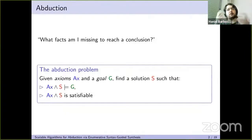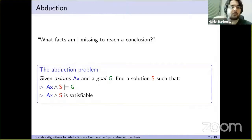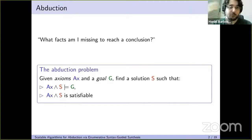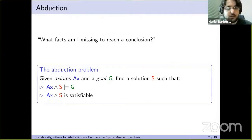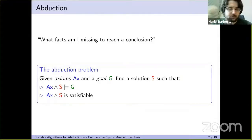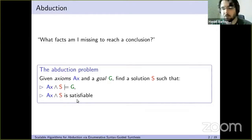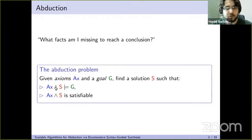Abduction — there are different definitions in different fields, but the one we're interested in is: what are the facts that are missing so that I can reach a conclusion, I can prove something. The definition we go by is that given a set of axioms and a goal, you must find a solution. A solution is one that is consistent with the set of axioms, and such that the solution together with the axioms is sufficient to entail the goal.